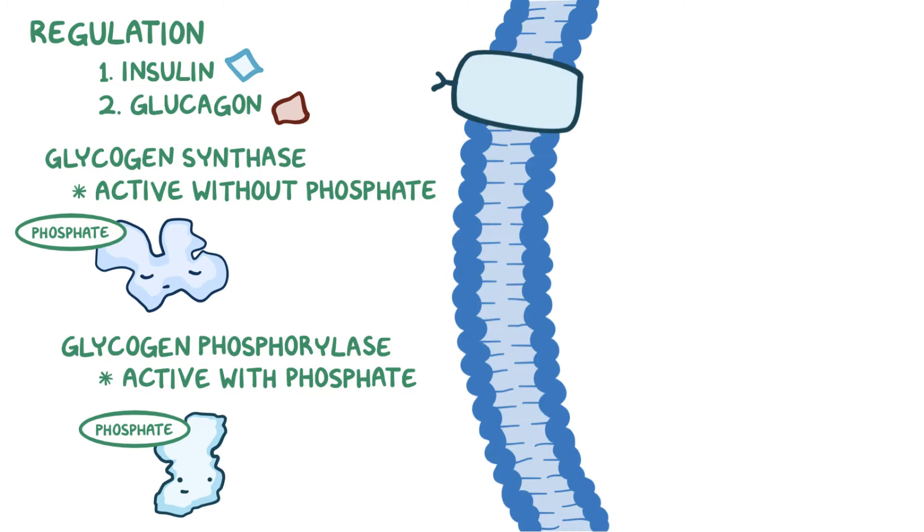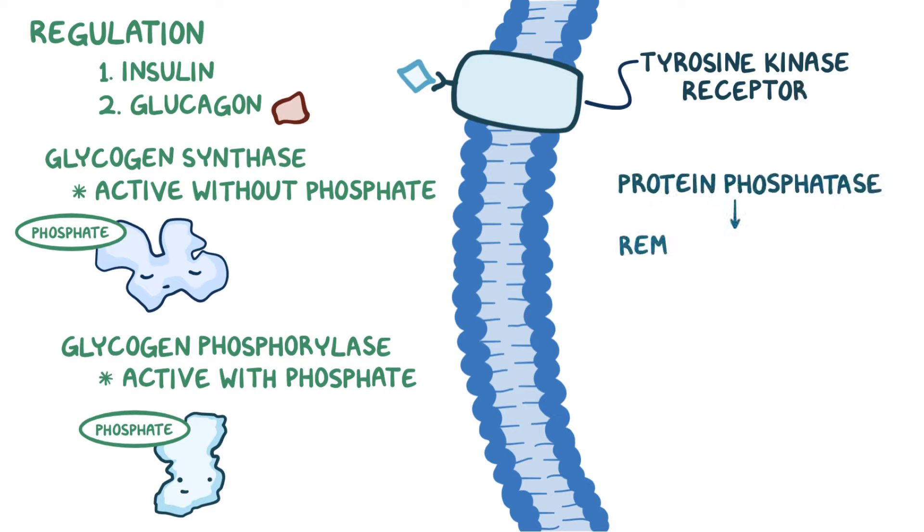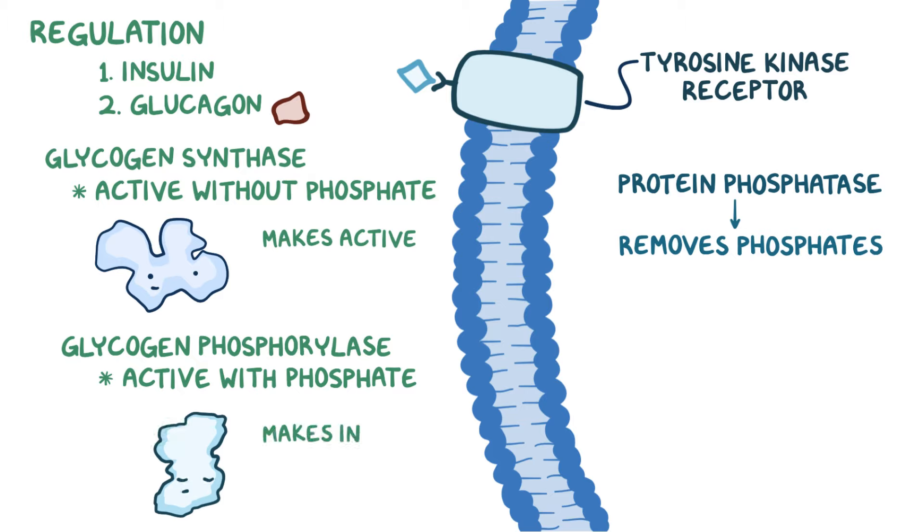So in liver and skeletal muscle cells, insulin binds to a tyrosine kinase receptor on the cell surface, and that ultimately activates a protein phosphatase which goes around removing phosphates from glycogen synthase, making it active, as well as from glycogen phosphorylase, making it inactive. This promotes glycogen synthesis and decreases its breakdown.